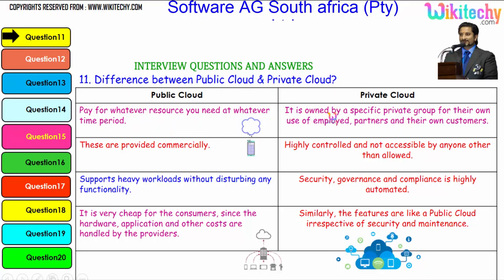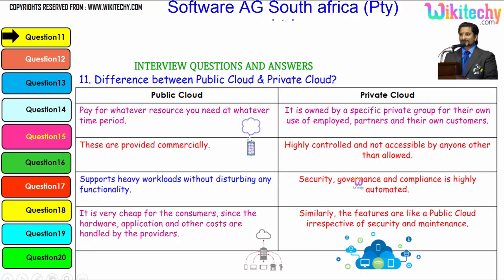The private cloud is owned by a specific private group for the own use of employees, partners and their own customers. These are provided commercially. It is highly controlled and not accessible to anyone other than those allowed. It supports heavy workloads without disturbing any functionality. Security, governance and compliance are highly automated. It is very cheap for the consumers since the hardware, application and other costs are handled by the providers.